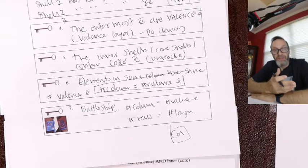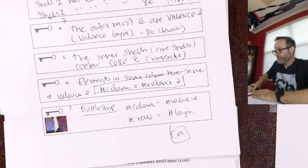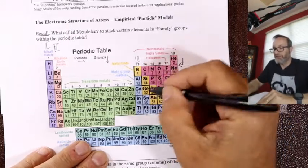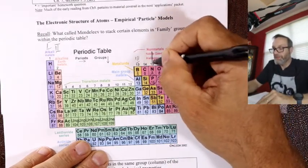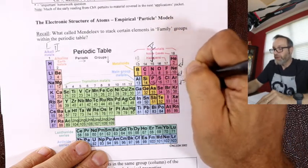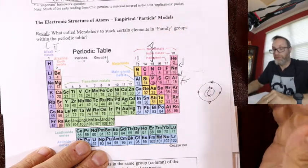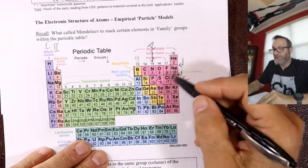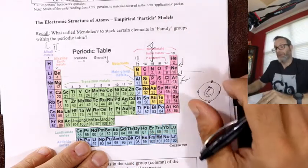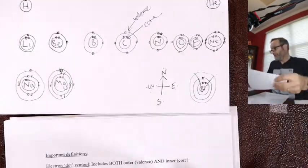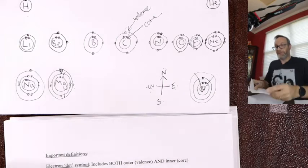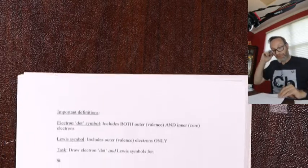If I pick any of the first 20 elements, the Battleship analogy works. Let's try phosphorus — it's in column 5, row 3, so it's going to have three layers with five on the outside. That, ladies and gentlemen, in a nutshell, is how the periodic table relates to electronic structure. Remember Battleship and you'll never get it wrong. I'm about to run out of time, so I'll briefly pause and come back.